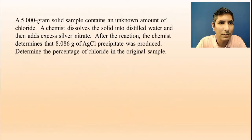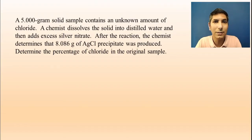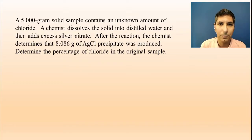Let's try another problem. This one is not quite as long. This one says a 5.000 gram solid sample contains an unknown amount of chloride. A chemist dissolves the solid into distilled water and then adds excess silver nitrate. After the reaction, the chemist determines that 8.086 grams of silver chloride precipitate was produced. Determine the percentage of chloride in the original sample. This is a very common process. This is something called a gravimetric analysis where you might be in the laboratory and you are given a sample in a bottle or a vial. In this case, it's 5 grams in the bottle. And your job is to determine what percentage of that bottle is chloride ion.